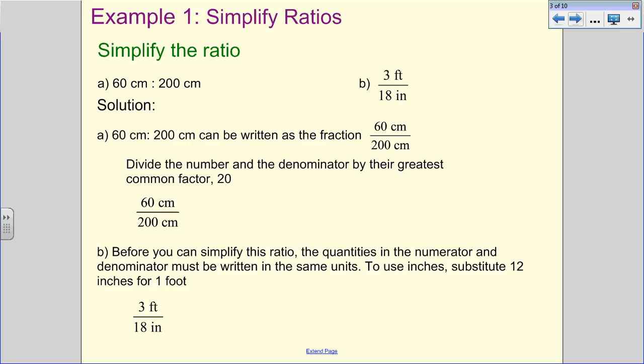All right, so let's take a look at what we have here. We want to simplify ratios. We have 60 centimeters to 200 centimeters. So we can write it with a colon like that. Or 3 feet over 18 inches. So what we're going to do is take this ratio separated by the colon and write it as a fraction. 60 centimeters over 200 centimeters.